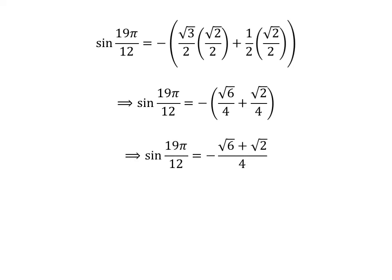As the denominator of both fractions in the above expression is the same, sin of 19 times pi upon 12 is equal to minus of square root of 6 plus square root of 2 upon 4.